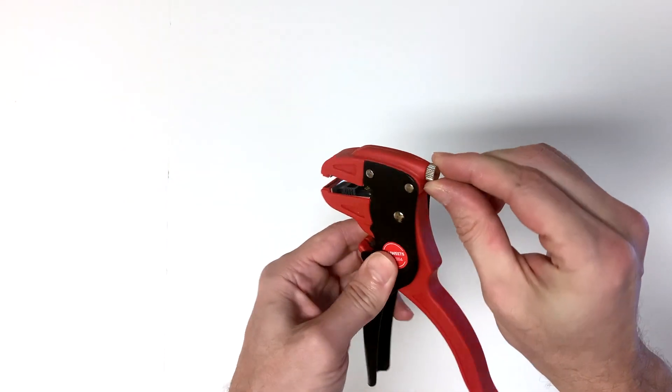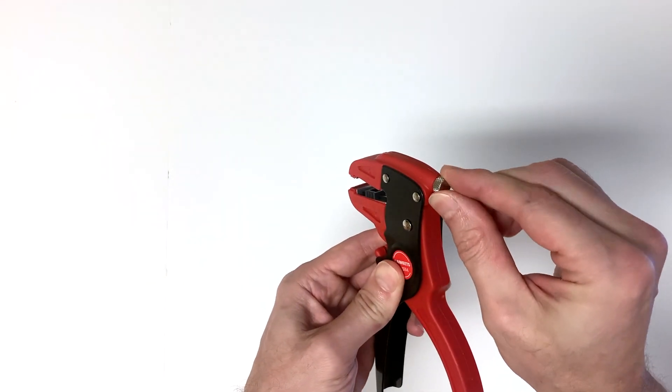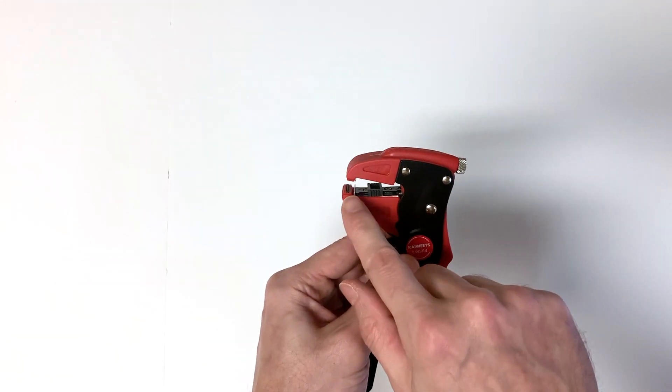Up here at the top is going to be a knob that can be turned clockwise and counterclockwise and this will adjust the tension on those teeth.